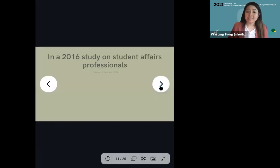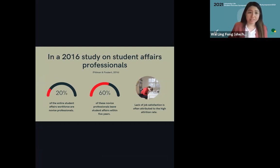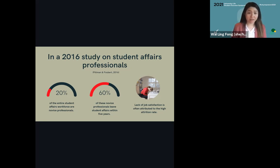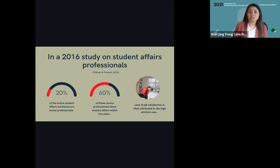As I started researching professional identity in student affairs, I learned that novice student affairs professionals face some real issues. In a 2016 study, 20% of the entire student affairs workforce were novice practitioners, but within five years, 60% of those novice practitioners were leaving the field. One of the reasons cited was a lack of job satisfaction, which is often tied to an unclear understanding of one's professional identity. This is a significant issue because institutions incur high costs continually training and retaining student affairs staff.